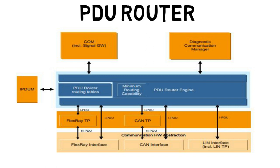The routing table defines the set of PDUs coming out of the COM modules, at what rate they have to be transferred, and which particular set of IPDUs have to be sent to the CAN bus and which other set of PDUs have to be transferred to the LIN or other buses. These need to be configured in the PDU router so that one set of PDUs can be mapped to the CAN bus and others to the LIN or FlexRay interfaces.